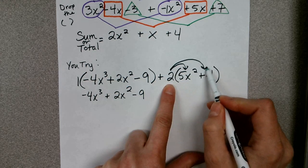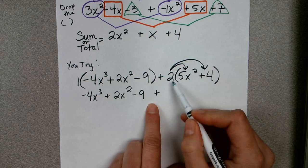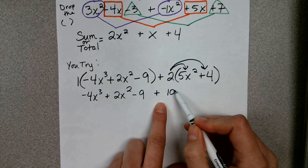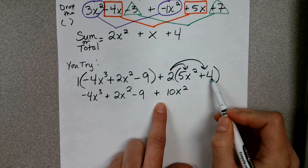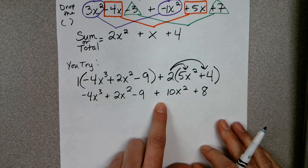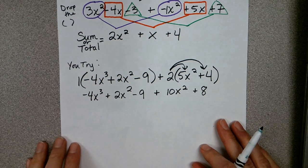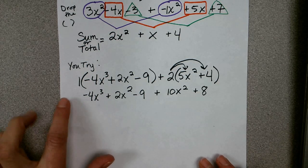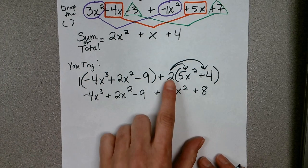And so that's going to give us 2 times 5x² is 10x², and 2 times 4 is plus 8. Okay, so once we took care of the parentheses by either dropping them or distributing the number in, now again we're in the situation where we want to combine like terms.